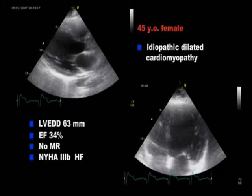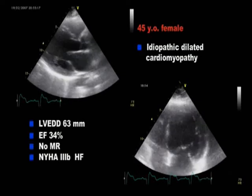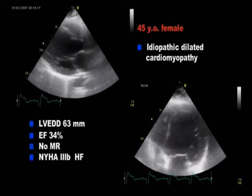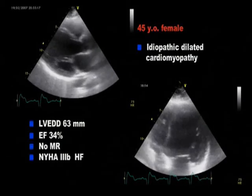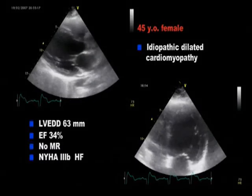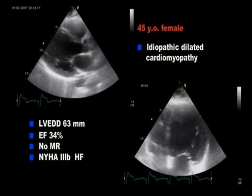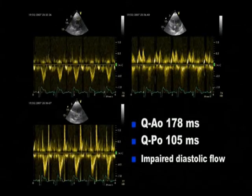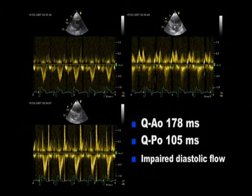This is a 45-year-old female with dilated cardiomyopathy and New York Heart Association Class III heart failure. The echo shows a dilated cardiomyopathy with an ejection fraction of 34%, a left ventricular end diastolic diameter of 63 mm, and no mitral regurgitation. The time delay between left and right ventricular ejection is 73 ms with an impaired diastolic flow, supporting the need for CRT.